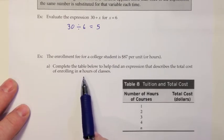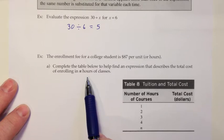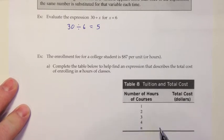Complete the table below to help find an expression that describes the total cost of enrolling in n hours of classes. Our goal is to come up with an expression that says if a student is taking n hours, how much is that going to cost? The idea of making this table is to work with some concrete numbers and see if we can develop a pattern that will help us get to that expression.